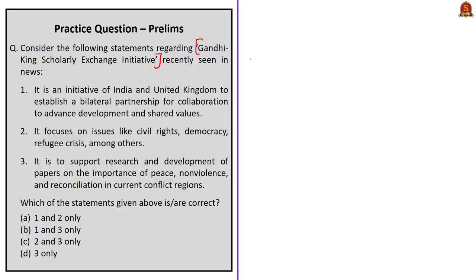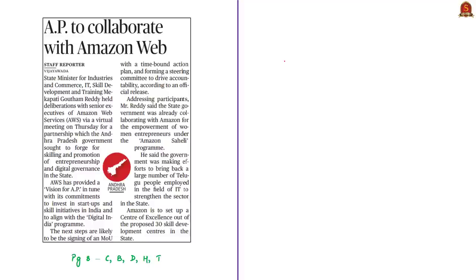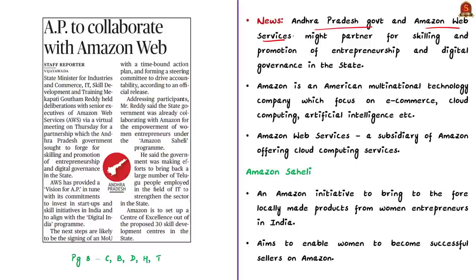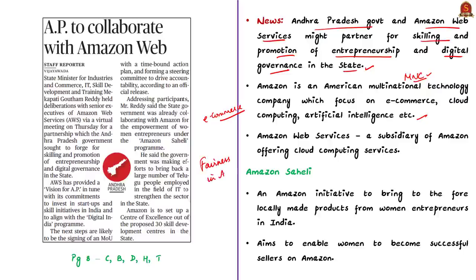These are the important aspects of the Gandhi-King Scholarly Exchange Initiative Bill, which aims to enrich existing India-US relations in academic and cultural cooperation. The next article discusses a collaboration between the Andhra Pradesh state government and Amazon Web Services for skilling, promotion of entrepreneurship, and digital governance. Amazon is an American multinational technology company focusing on e-commerce, cloud computing, and artificial intelligence. The US government has a partnership with Amazon in a program called 'Fairness in Artificial Intelligence,' expected to impact new AI applications from driverless vehicles to banking algorithms.